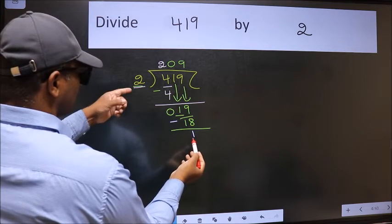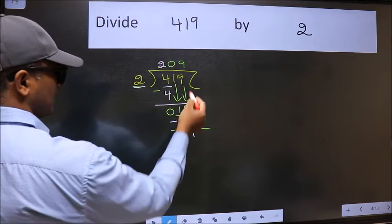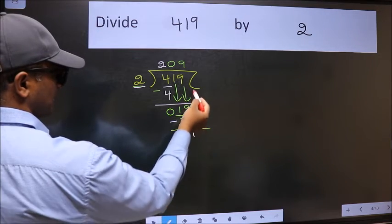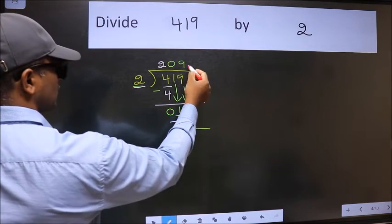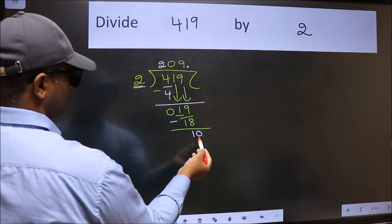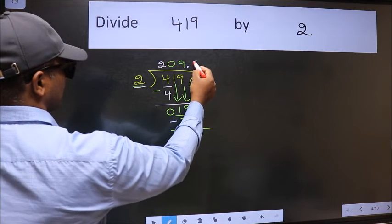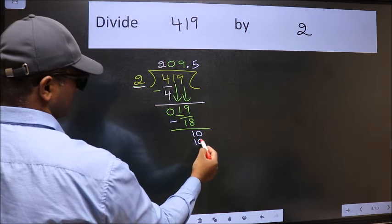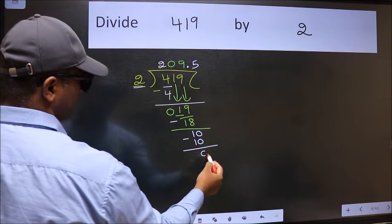1 smaller than 2 and we don't have any more numbers to bring it down. So we should put dot and take 0. So 10. When do we get 10 in 2 table? 2 5's, 10. Now we should subtract. We get 0.